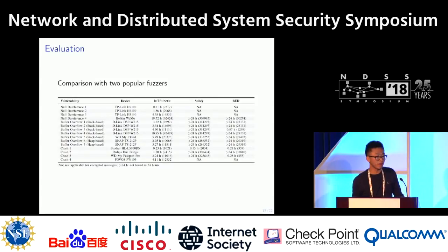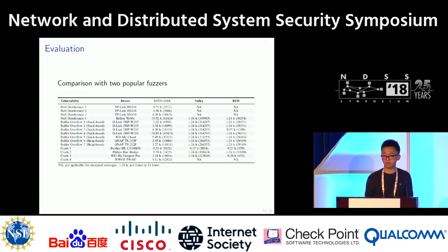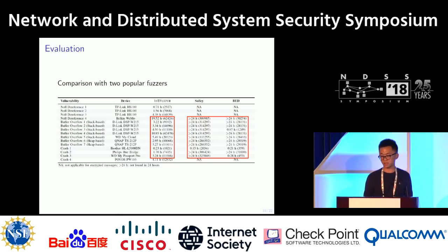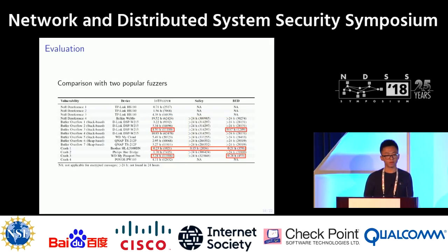We also compared IoT Fuzzer with two other popular fuzzers: Sulley, a popular open-source network fuzzer, and Bat, a network fuzzer in Kali Linux. IoT Fuzzer can handle encrypted messages. Generally it takes less time to find bugs, though for some bugs in devices that consume standard HTTP headers, IoT Fuzzer is less efficient compared to those two fuzzers.